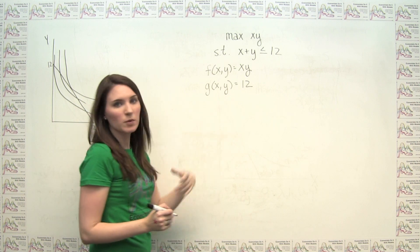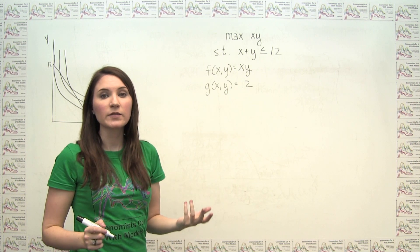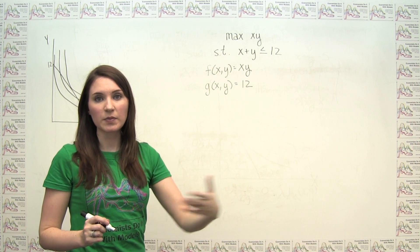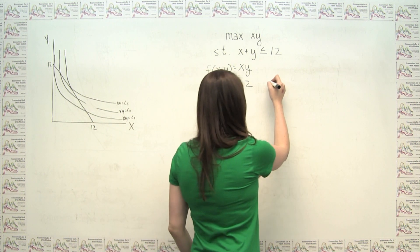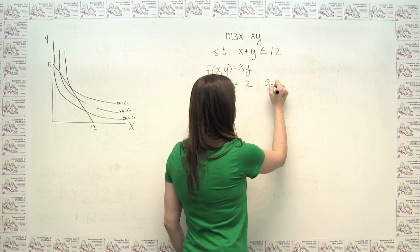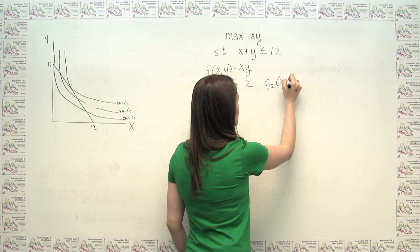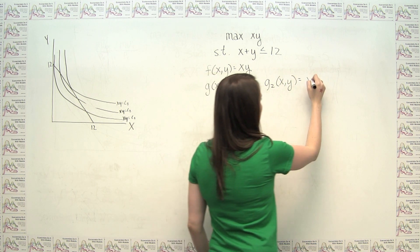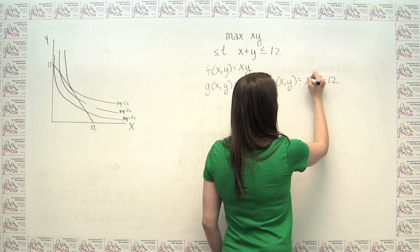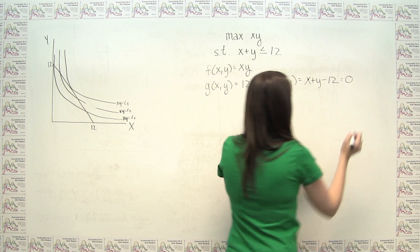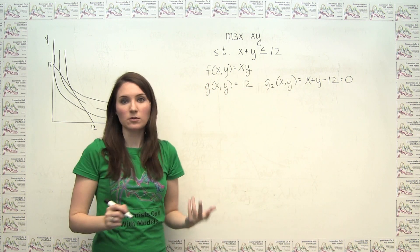Now we said that for the purposes of our Lagrange multiplier, our constraint had to be something equal to zero. So you can notice here that our what we were calling our g sub 2 of x and y is just x plus y minus 12, because that's what we want in the constraint sense to equal zero.